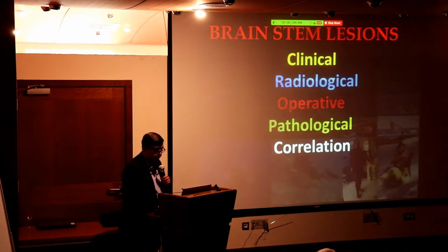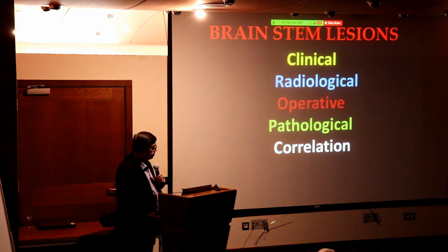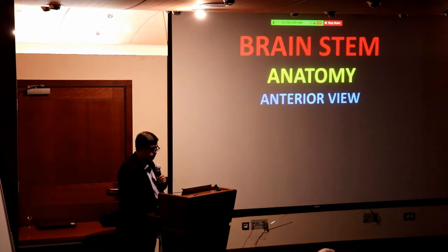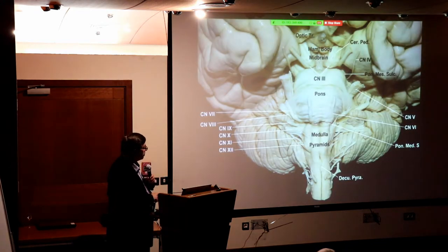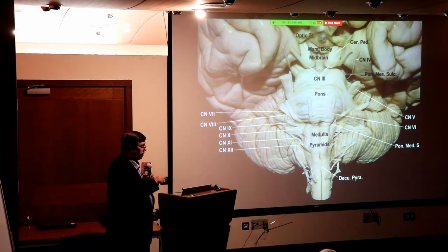We'll discuss the topic of today: brain stem lesions — the clinical, radiological, operative, and pathological correlation. We have to look at the anatomy of the brain stem. From the anterior view you will see the brain stem: the midbrain, the pons, and the medulla — each is a continent on its own with complex but learnable anatomy.